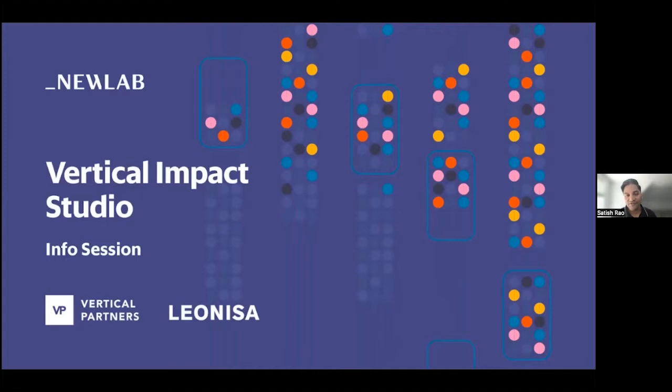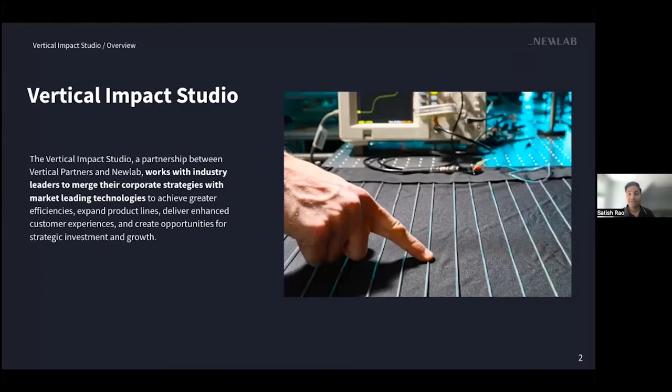Well everybody, thanks for joining us for our second information session on the Vertical Impact Studio, our partnership with Vertical Partners and working with our first industry partner in the studio, Leonisa. I'm Satish Rao, I'm the Chief Product Officer of NewLab. It's our department that runs these studios, and I'll tell you a little bit more about what that means. Just a quick intro on the Vertical Impact Studio - this is a partnership between NewLab and Vertical Partners, and our aim is to work with a variety of industries around accelerating their goals and their corporate strategies and finding enabling technologies that allow them to grow to new markets and ultimately creating opportunities for investment and growth.